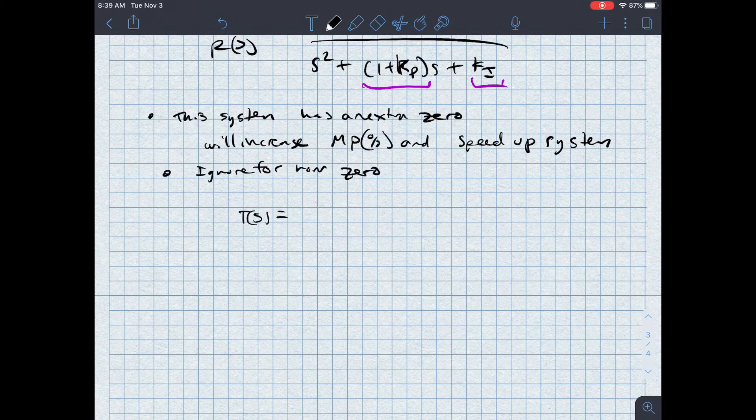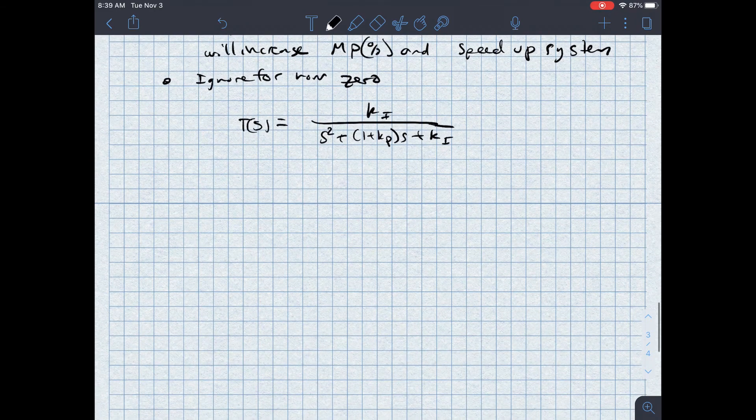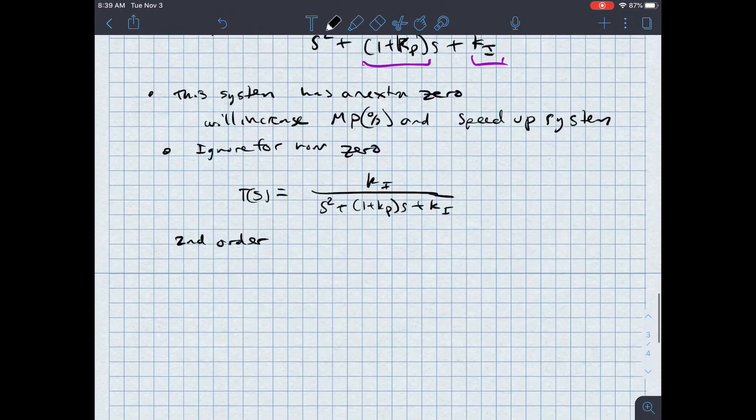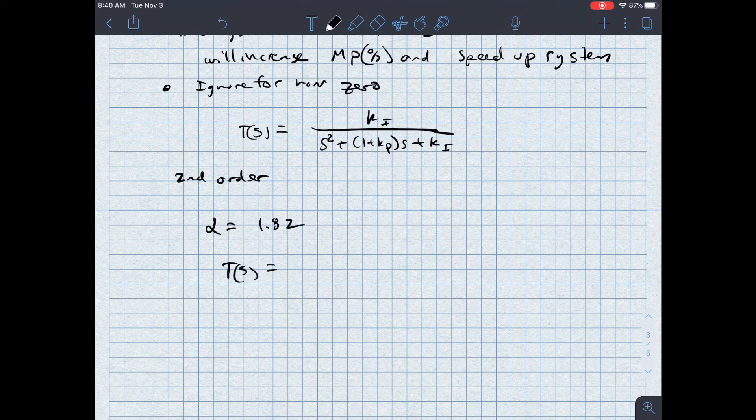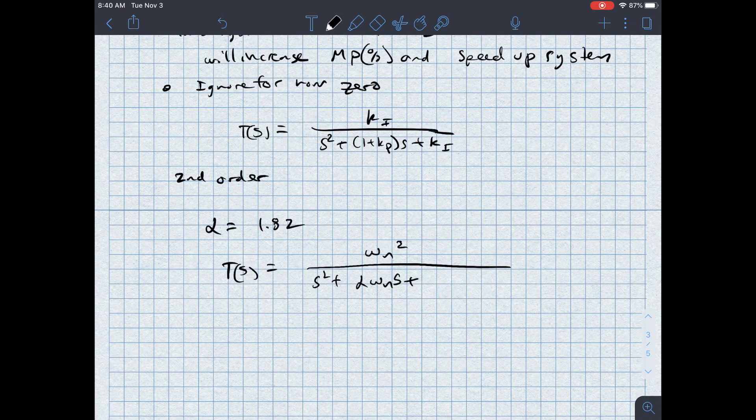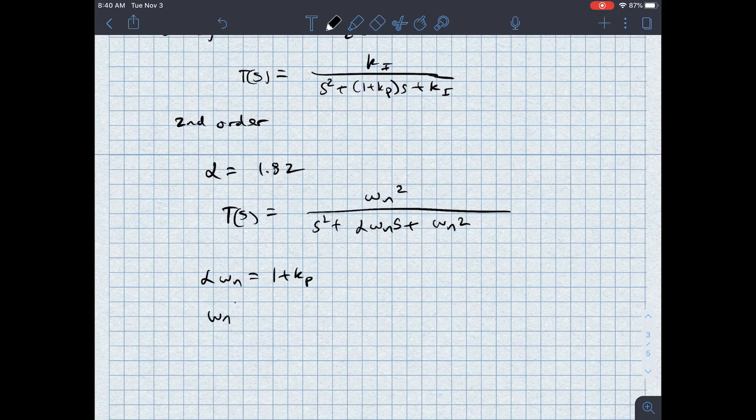So T of S is equal to KI over S squared plus one plus KP S plus KI. I know that this is a second order system, so let's zip up to this table. In a second order system, alpha is 1.82. So alpha is equal to 1.82. And comparing this to T of S is equal to omega N squared over S squared plus alpha omega N times S plus omega N squared. Comparing this, I know that alpha omega N is 1 plus KP and omega N squared is KI.